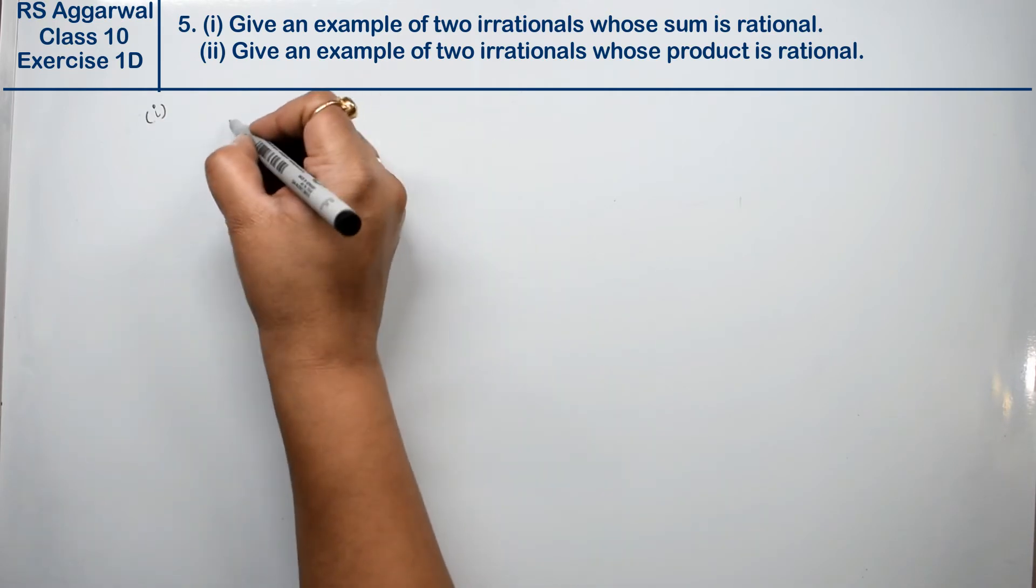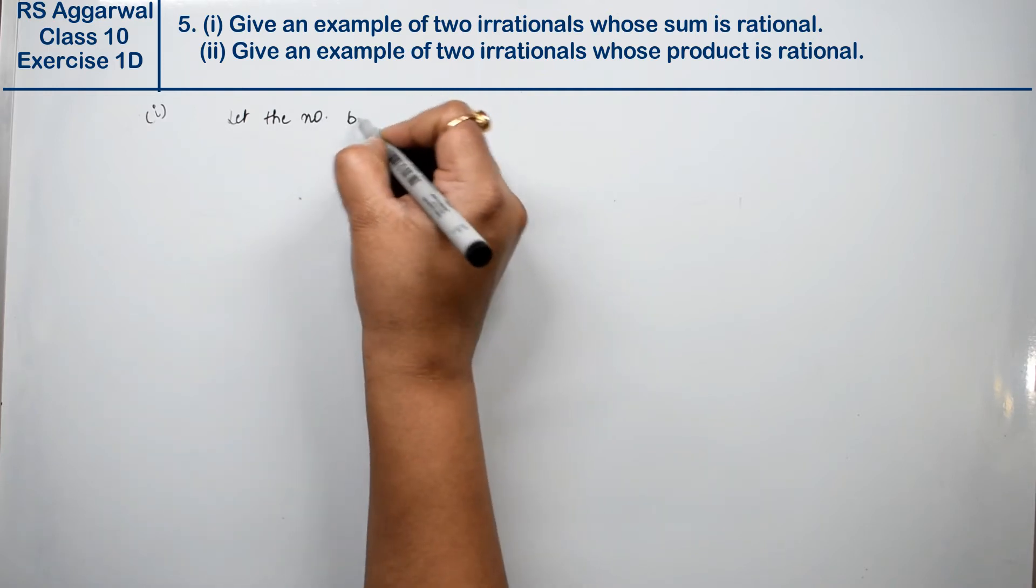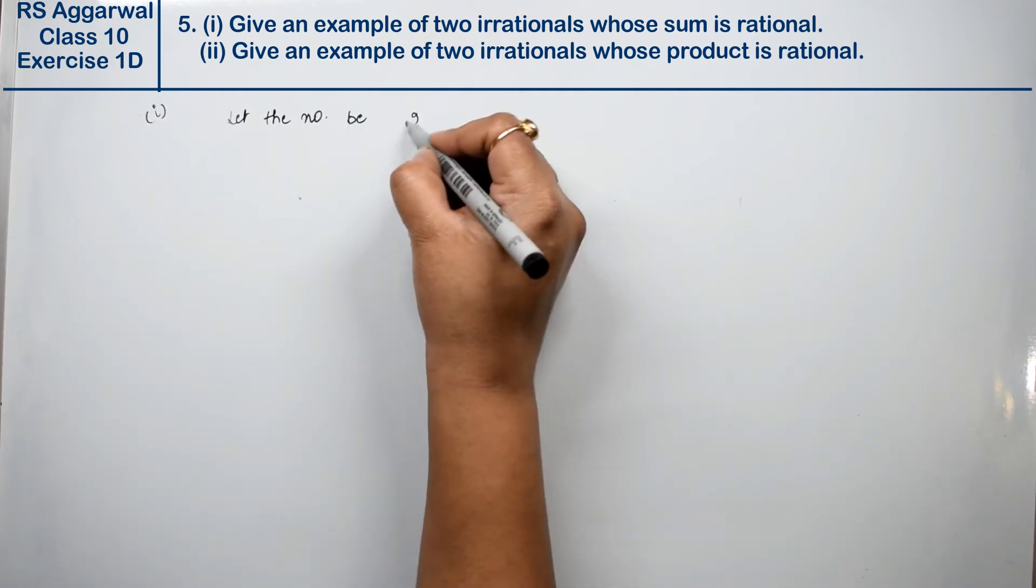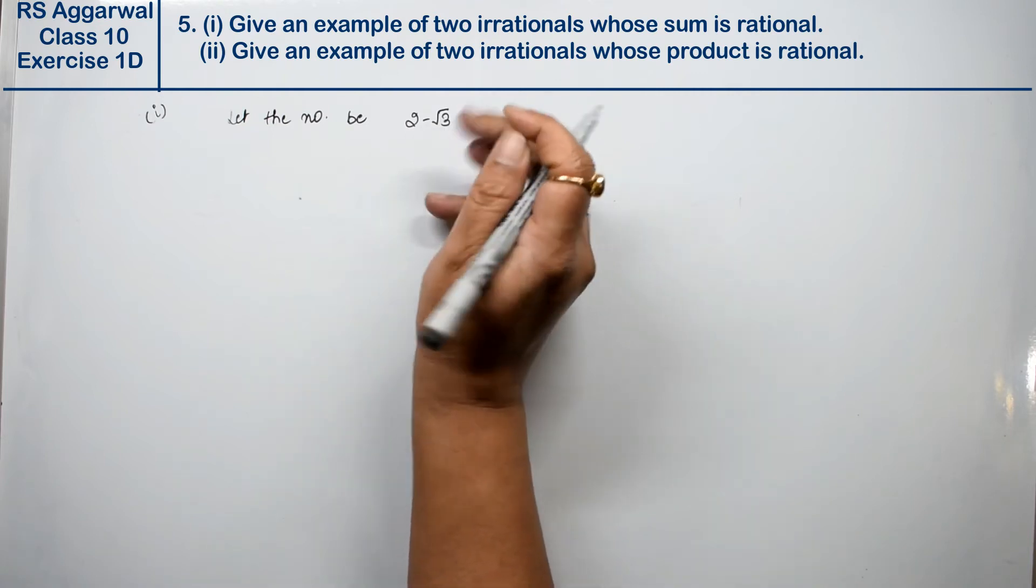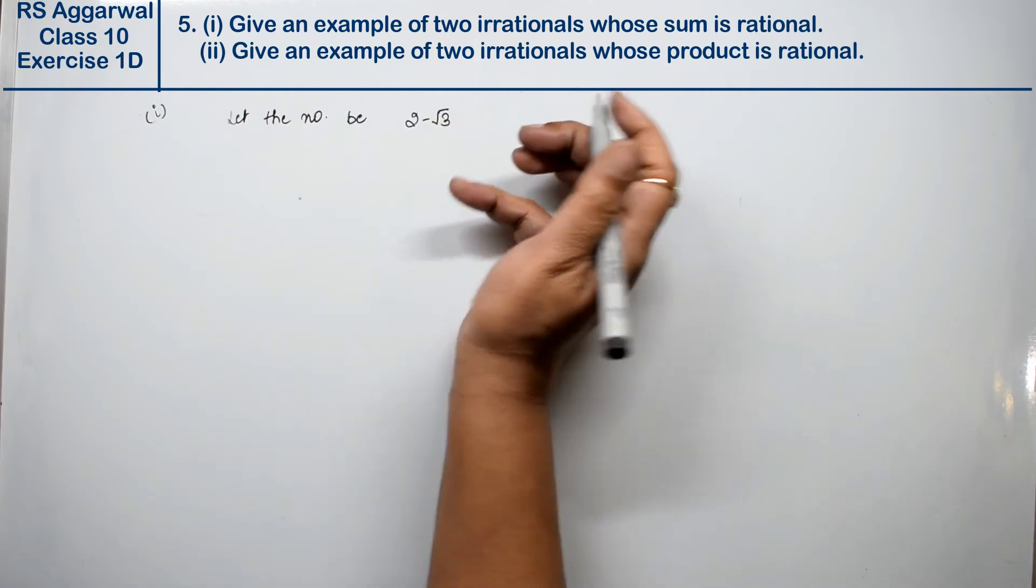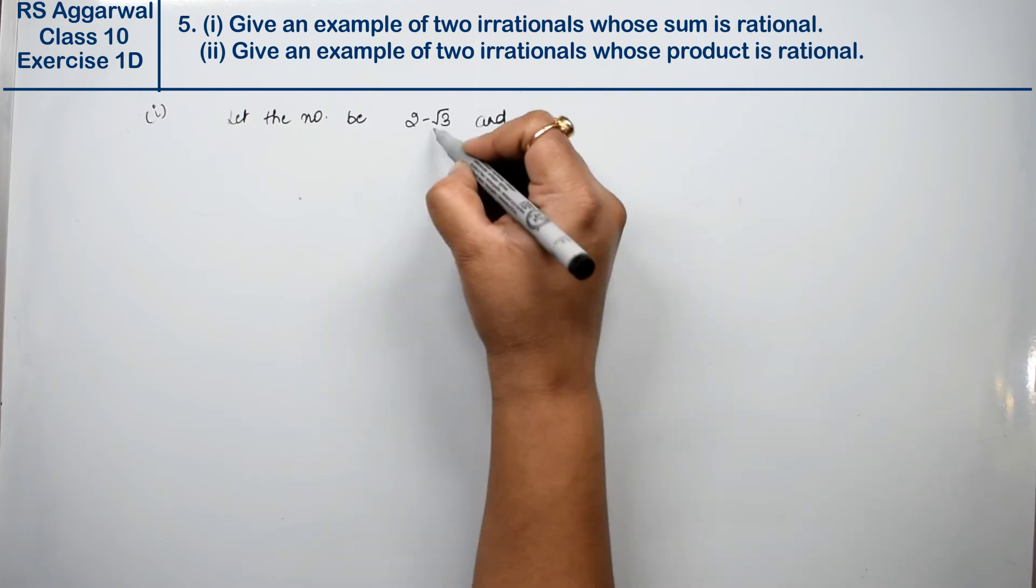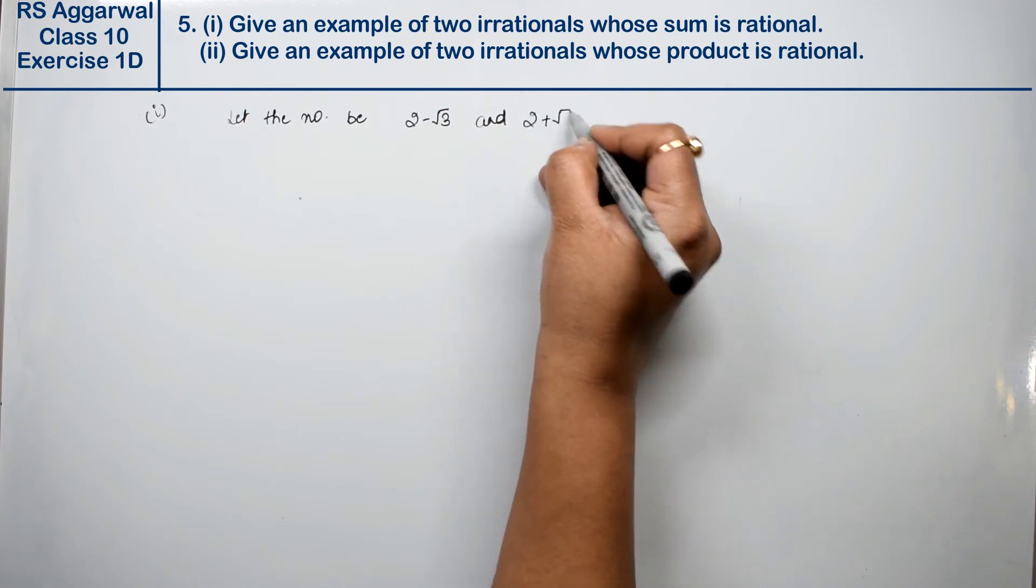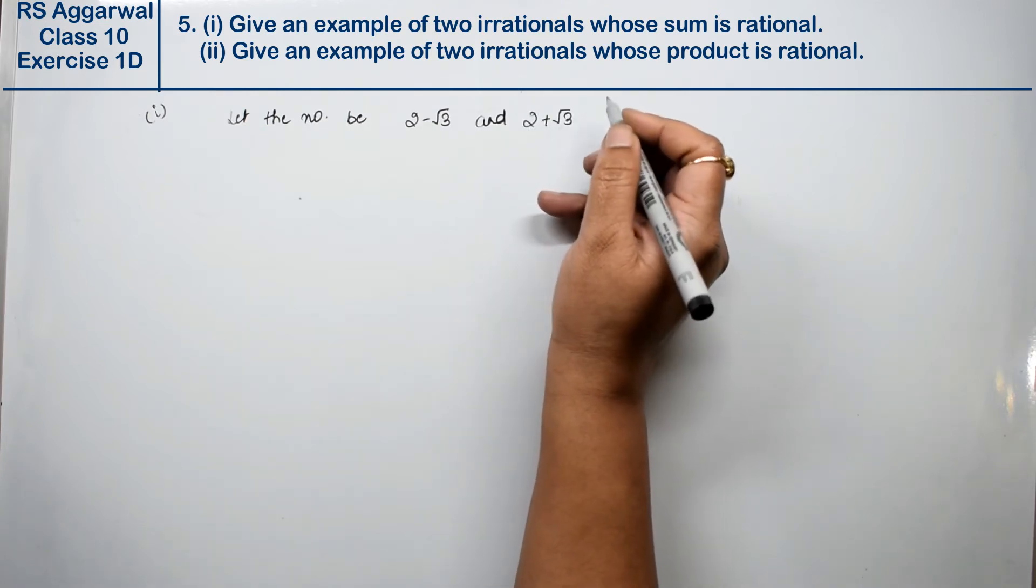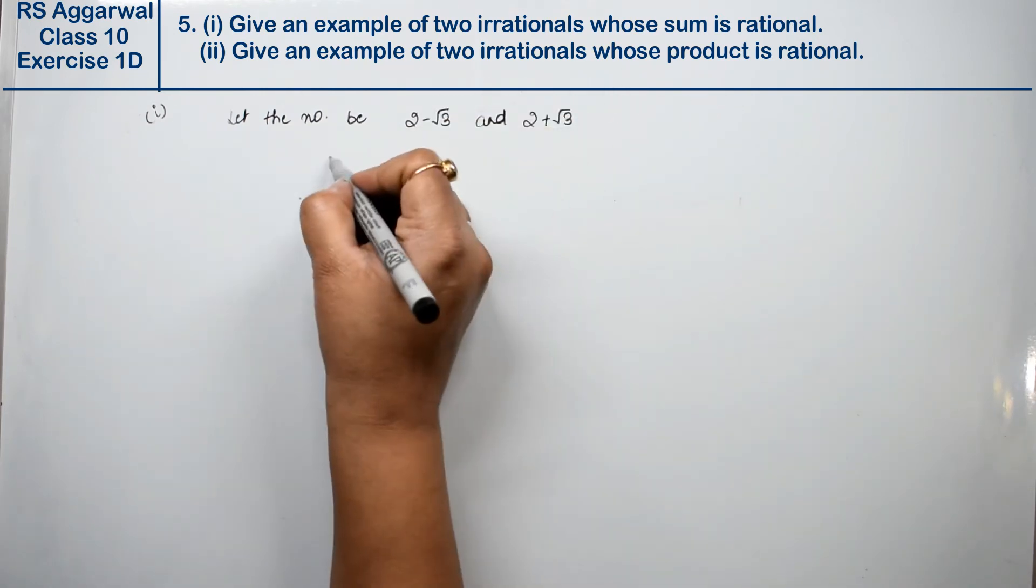So let the number be 2 minus root 3, which is irrational. If I have to cancel minus root 3, then I will take a plus. Why take a sum? Because we have to add both. Let's see how it comes.